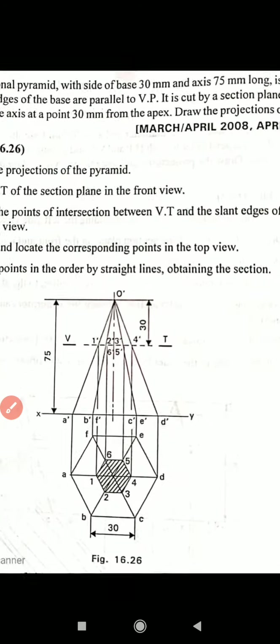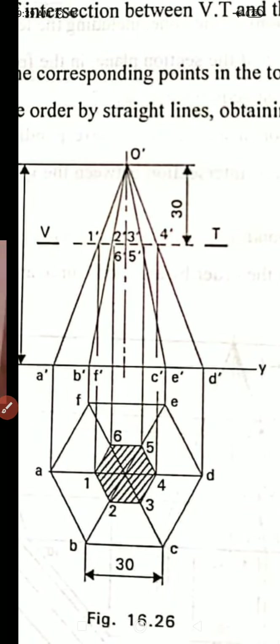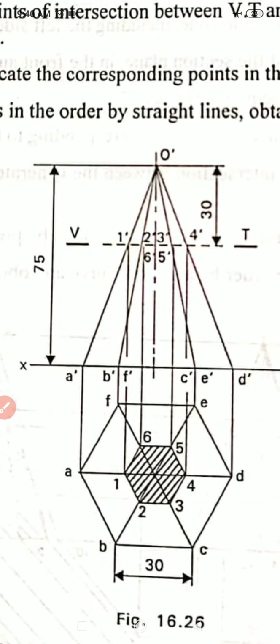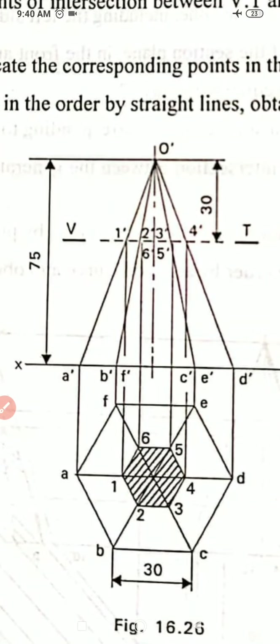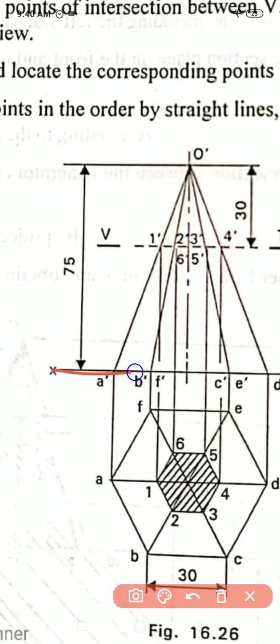Now let us draw the sectional views of the given pyramid. When the pyramid is resting on the horizontal plane, that is on HP, the true shape is a hexagonal shape and that is drawn in the horizontal plane only, in the top view. This is the XY axis line — below it is the top view and above it is the front view. We begin with the top view because that is the true shape. The condition is given: one side is parallel to the reference line, which is nothing but parallel to the vertical plane.